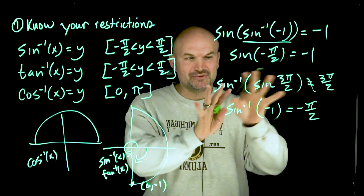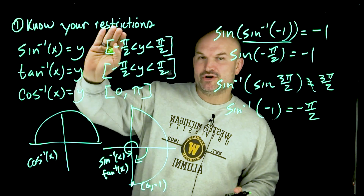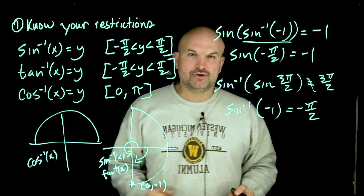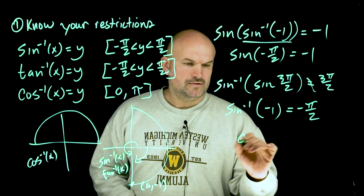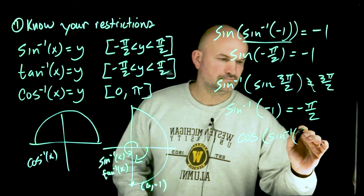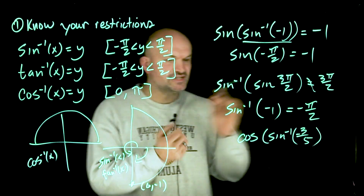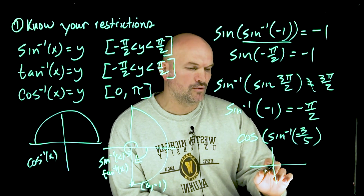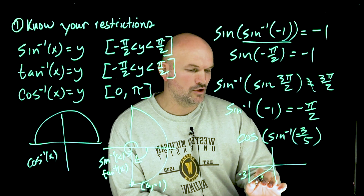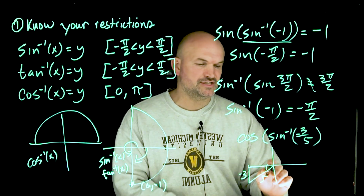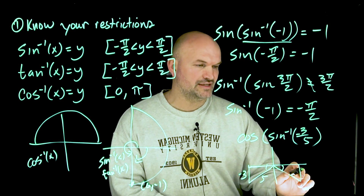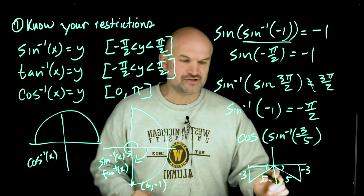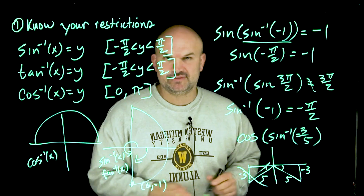Make sure you understand your restrictions when doing that composition. The other reason knowing your restrictions is so important is when you have to draw a triangle. For example, cosine of sine inverse of negative three over five. We need to draw a triangle, but the negative three over five means it could be in different quadrants. Since our restrictions require the angle to be in either the first or fourth quadrant, we use only the triangle that satisfies that — the one in the fourth quadrant.